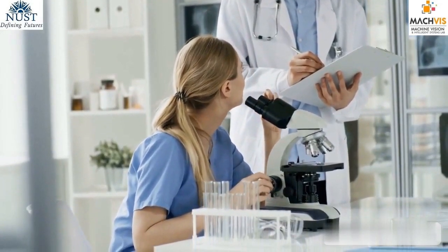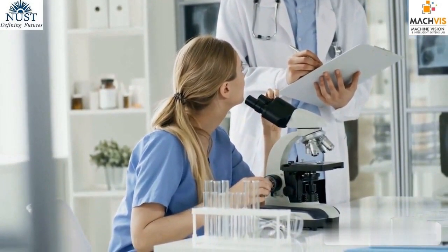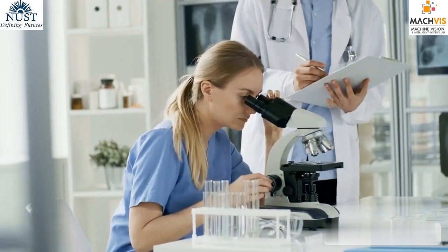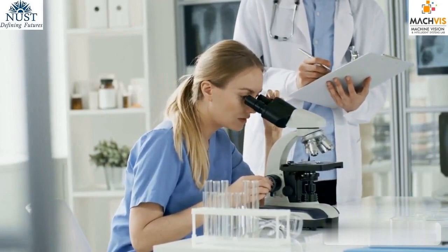Any feature of the cancer or characteristic of the patient that may affect the patient's outcome or survival time is called a cancer biomarker. For example, hormone receptors, biochemical markers, protein biomarkers, genetic mutations, age, gender, and ethnicity.